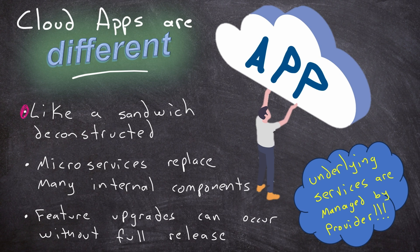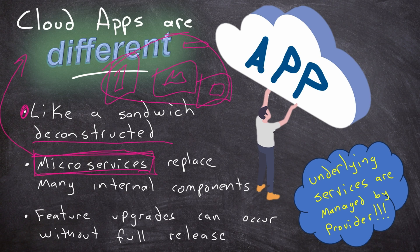With cloud applications, usually there's not one big monolithic application - it usually has lots of parts. I like to think of this like a sandwich: cloud apps are like that sandwich deconstructed. You have a pile of ham, a slice of cheese, a piece of bread, and they're all tied together so the user experiences the entire sandwich. That's where microservices come into play, designed to function independently and communicate with other microservices.